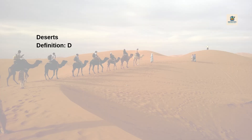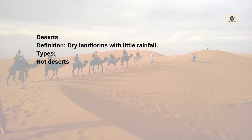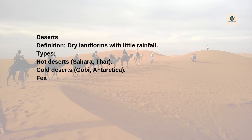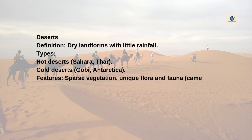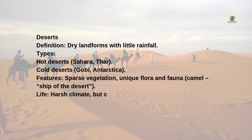Deserts: Definition — Dry landforms with little rainfall. Types: Hot deserts (Sahara, Thar) and Cold deserts (Gobi, Antarctica). Features include sparse vegetation and unique flora and fauna. The camel is called the 'Ship of the Desert.' Life is harsh, but cultural traditions like songs and legends are found in the Thar Desert.